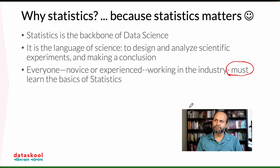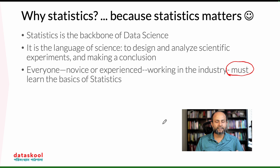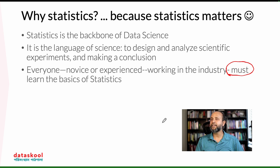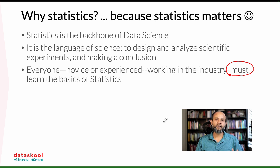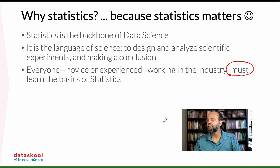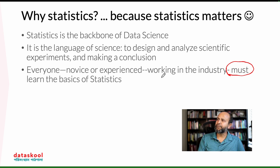They just see some numbers and things like that, but they cannot move past that. That's where statisticians and data scientists work — in hospital settings, in industry, in banks, in financial organizations, in big retail companies like Walmart. These companies have huge decision science departments where statisticians work.